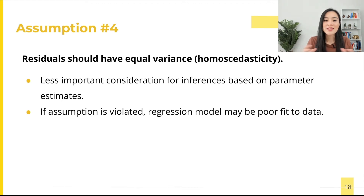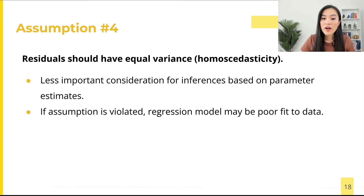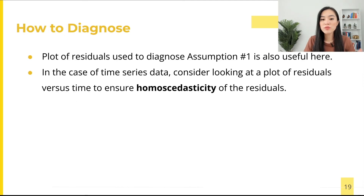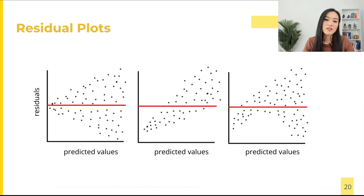Moving on to the last assumption of linear regression, sometimes referred to as homoscedasticity of residuals. Homoscedasticity means equal variance — the residuals should have approximately equal variance. If not, the regression model might not be a good fit for certain data points, i.e., those with large residuals. In practice this assumption is often violated, and it is a less important consideration for inferences based on parameter estimates. We can use the residual plot to verify this assumption.